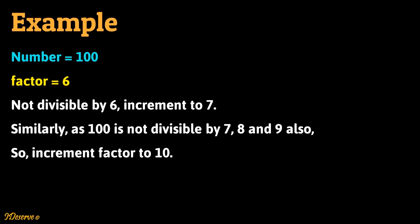Now the factor is 6. Since the number is not divisible by 6, we increment factor to 7 and move on to next iteration. Similarly, as 100 is not divisible by 7, 8, and 9 also, we increment factor to 10.